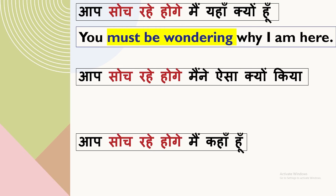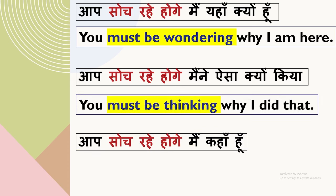You must be thinking why I did that. Notice: 'why I am here,' not 'why am I.' 'Why I did that,' not 'why did I.' Because when you use a question word or a question-word sentence at the beginning of this kind of sentence, it works as a connector — as a conjunction.